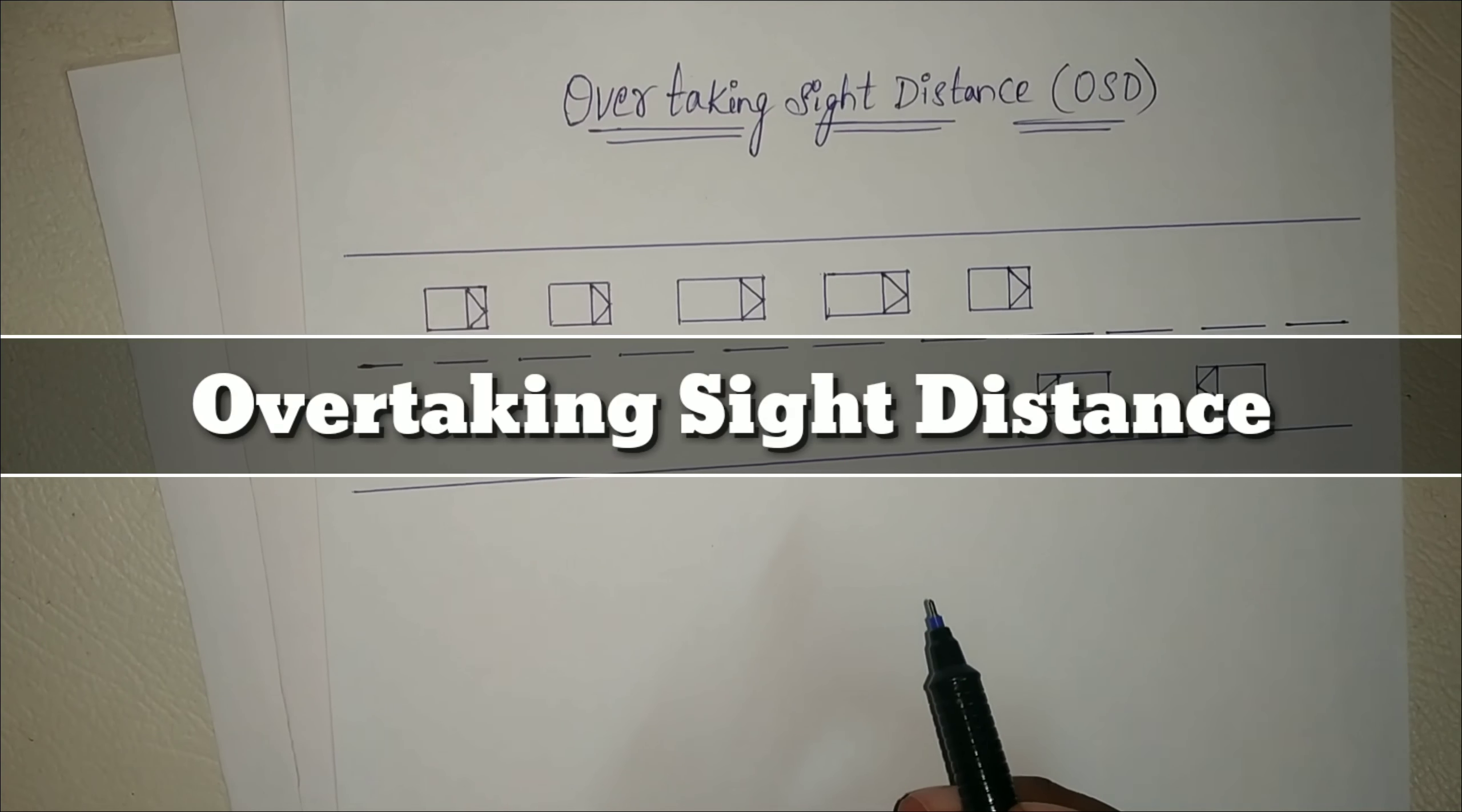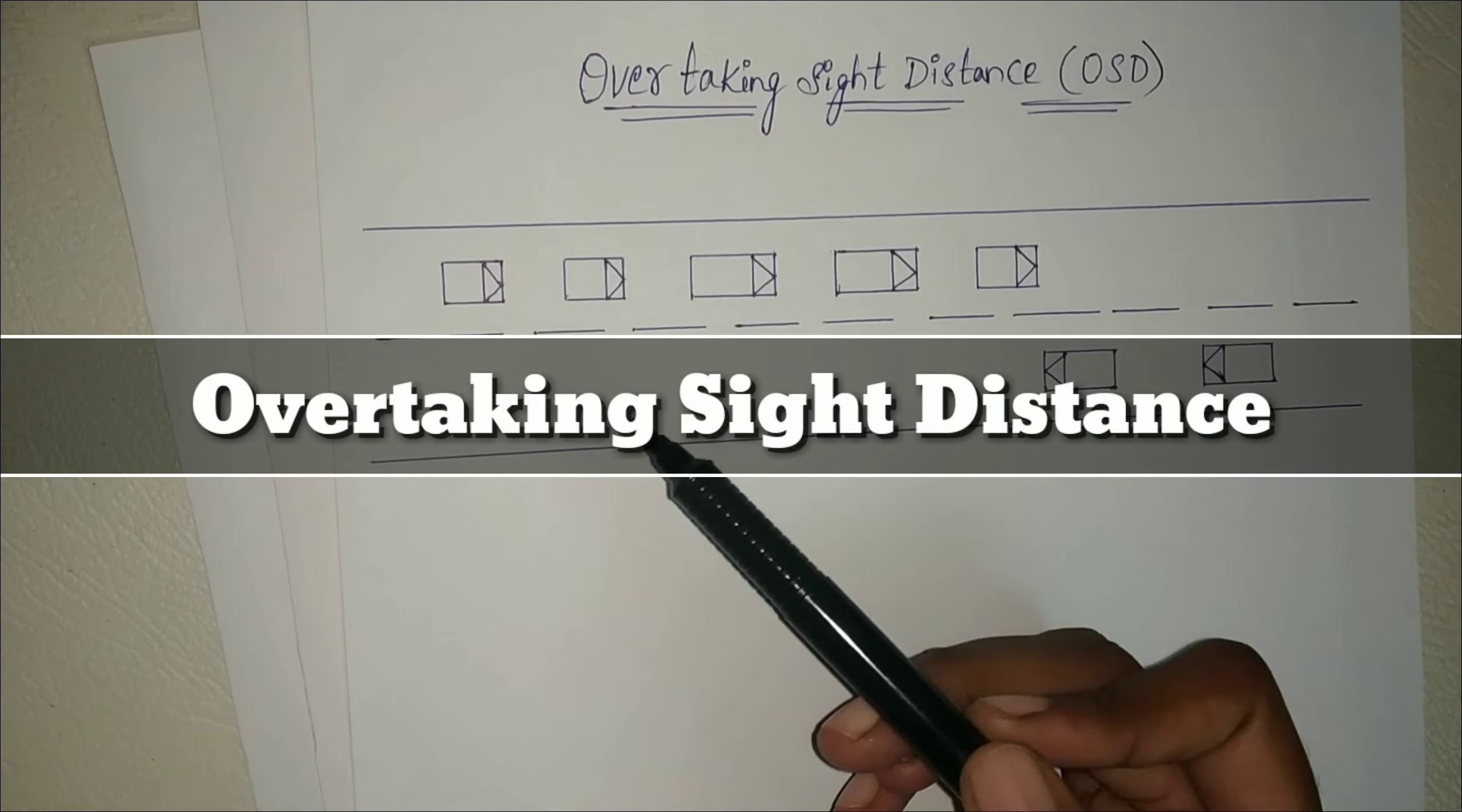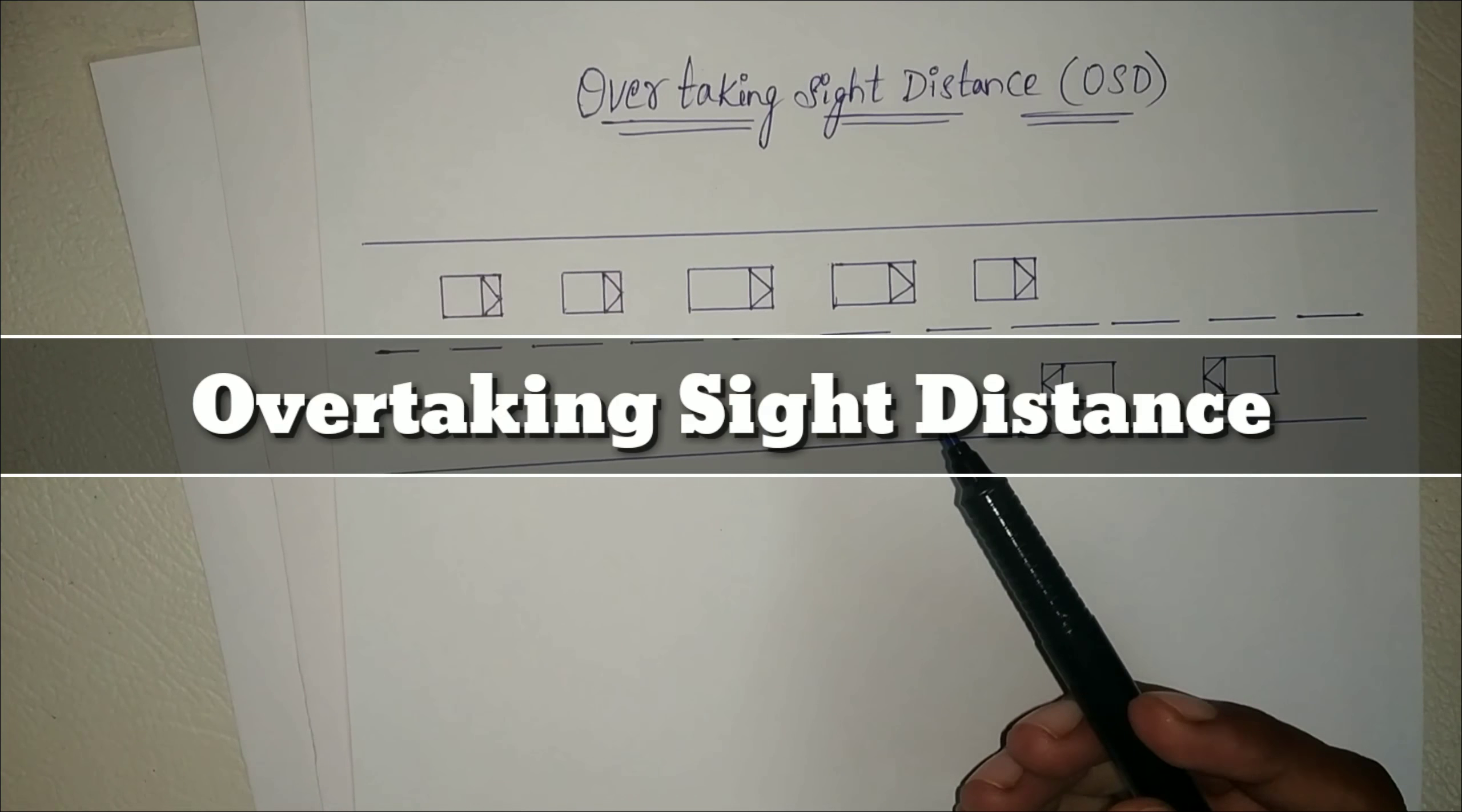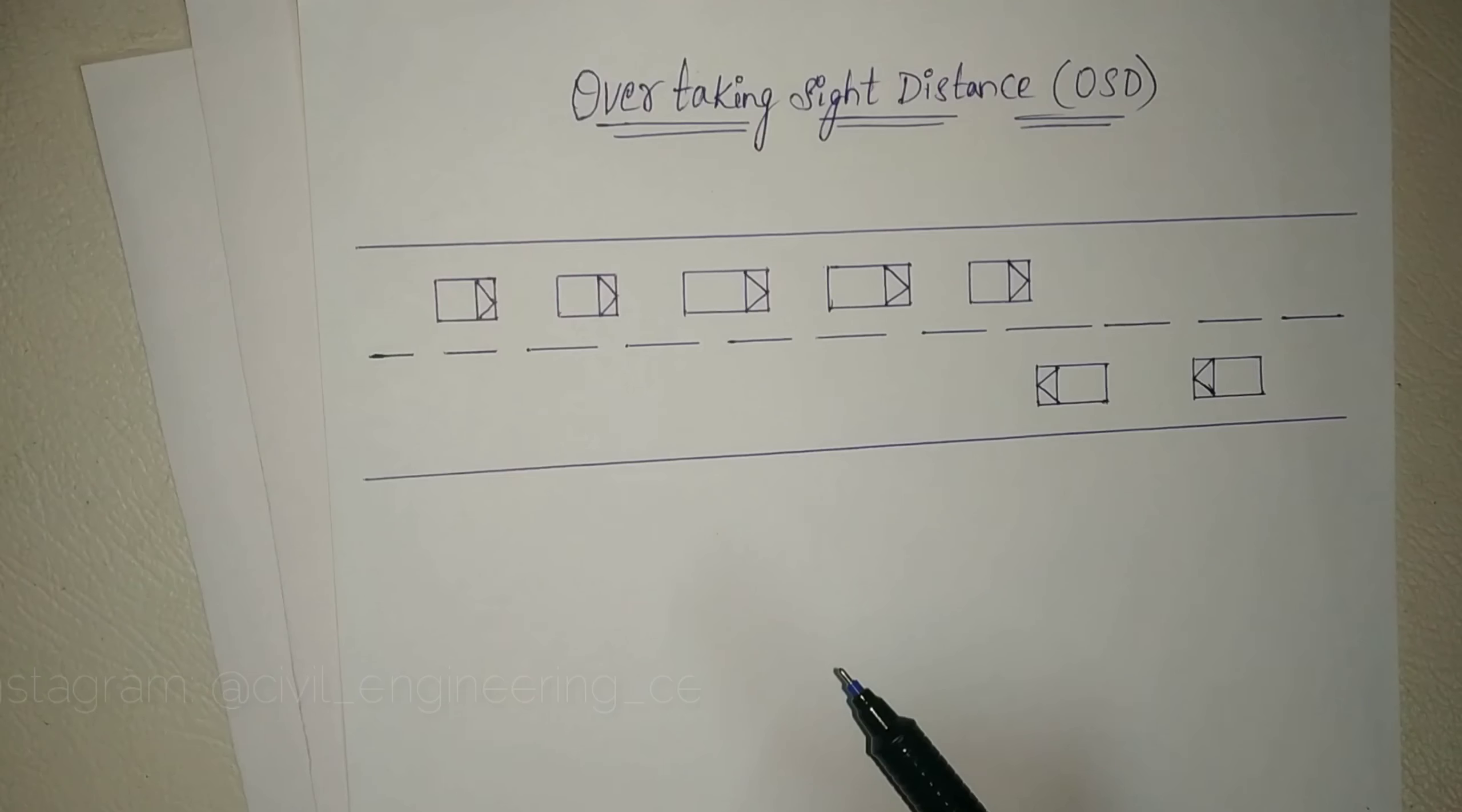Hi friends, in this video we will discuss overtaking sight distance. If all vehicles travel along a road at the design speed, then theoretically there should be no need for any overtaking. In fact, all vehicles do not move at the design speed, as each vehicle driver is free to travel at lower speeds, and this is particularly true under mixed traffic conditions.